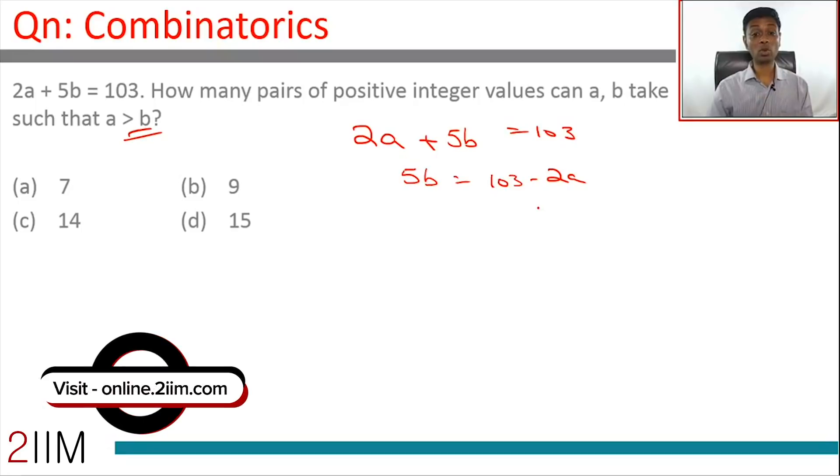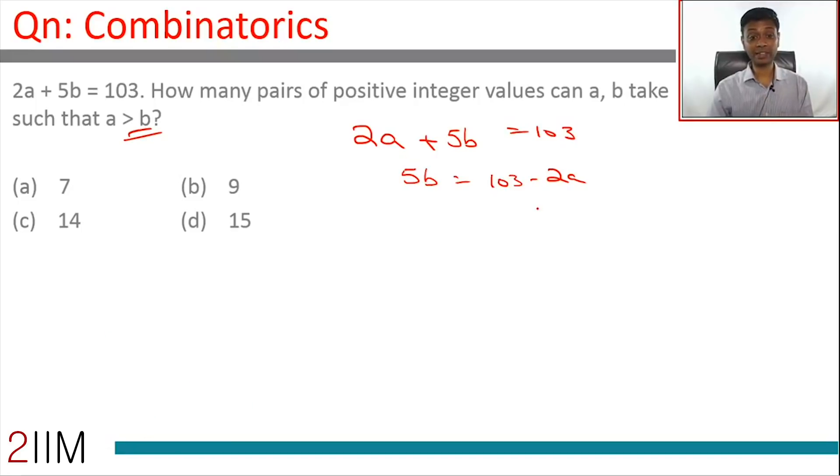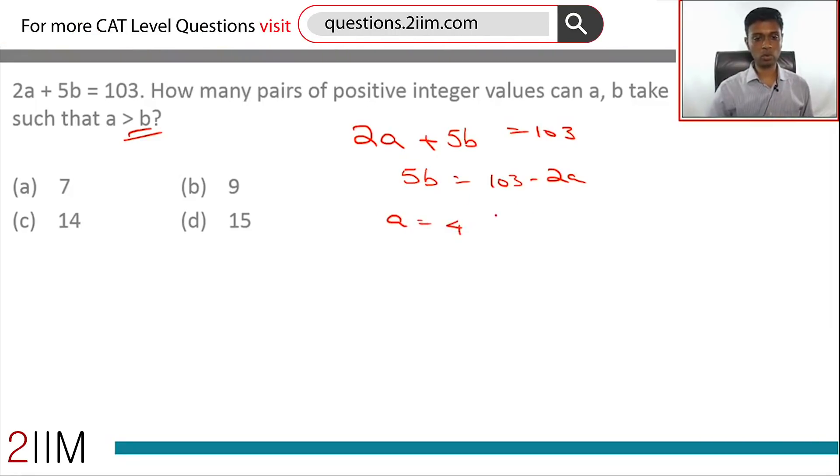If a is 4, this becomes 103 minus 8, that's 95. 5b is 95, that works! So you could have a equal to 4, b equal to 19. That works. When a equals 4, we get 8. 103 minus 8 is a multiple of 5, which is true.